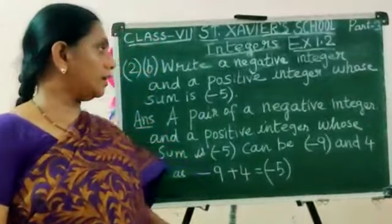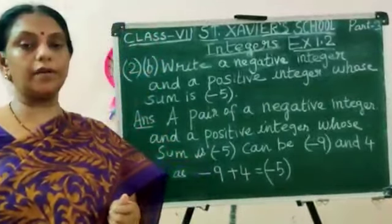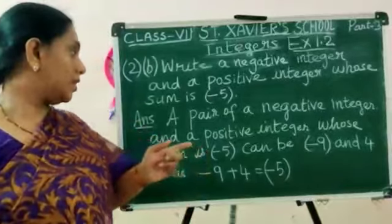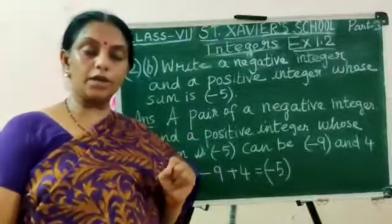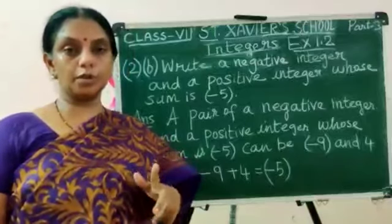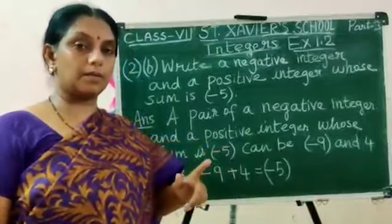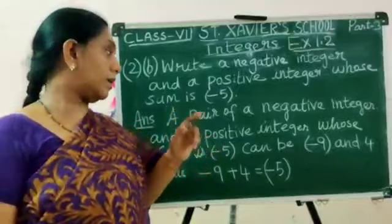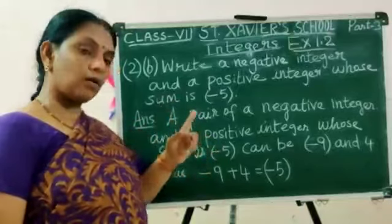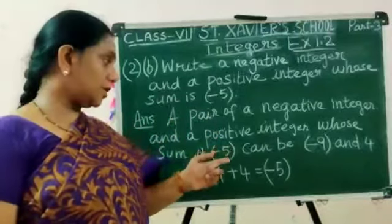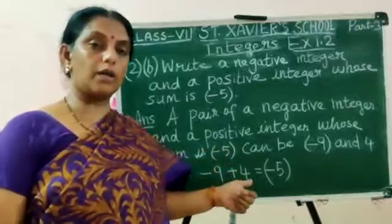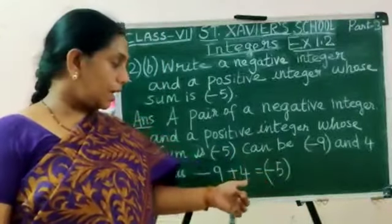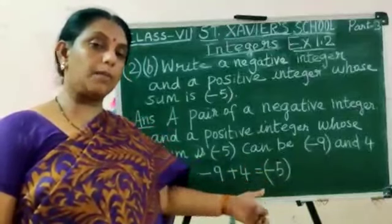Write a negative integer and a positive integer whose sum is minus 5. One should be negative, another positive, with a plus sign between them. A pair can be minus 9 and 4, as minus 9 plus 4 equals minus 5.